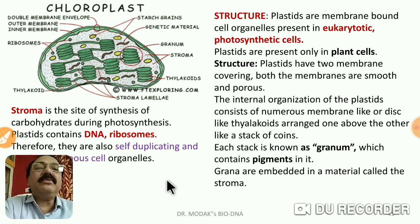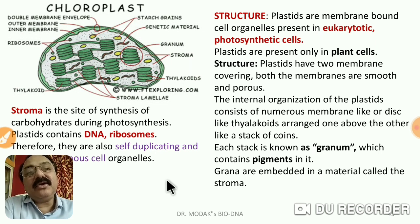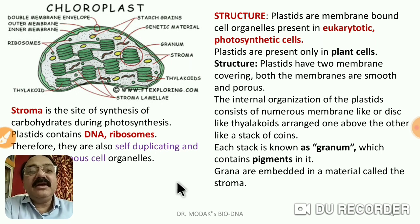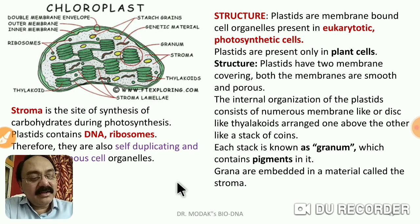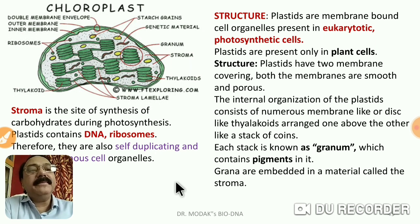Chloroplasts are present in eukaryotic photosynthetic cells. An important point: prokaryotes can be photosynthetic, but because they are prokaryotic, chloroplasts are not present in them. Chloroplasts are absent in photosynthetic prokaryotic cells like cyanobacteria — certain bacteria perform photosynthesis but do not have chloroplasts. That is an important note.